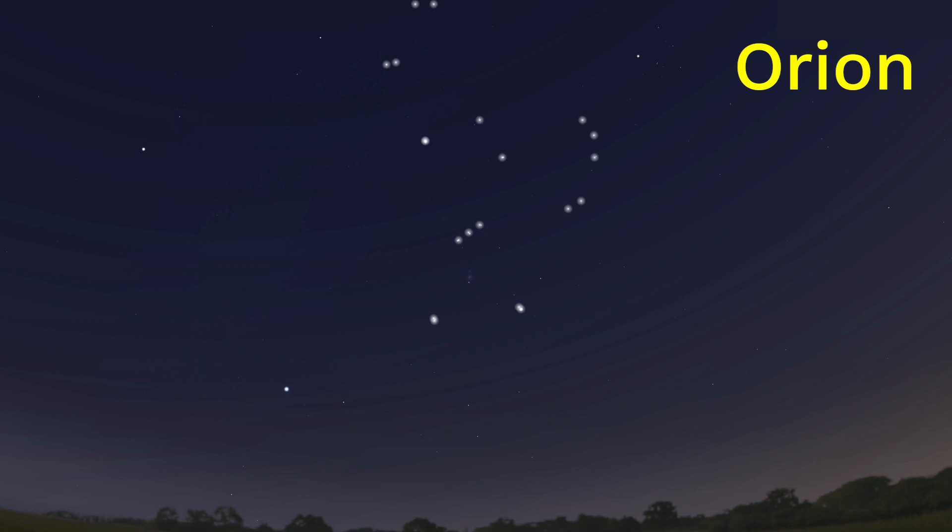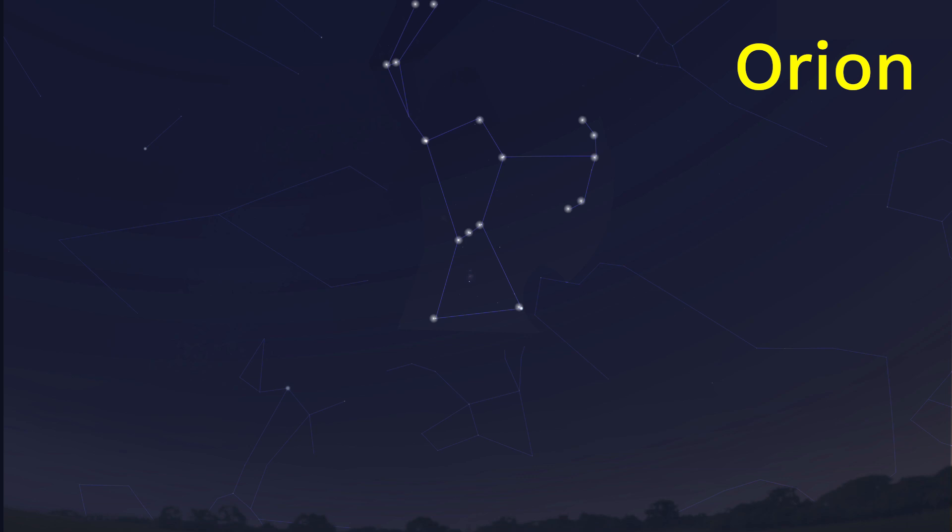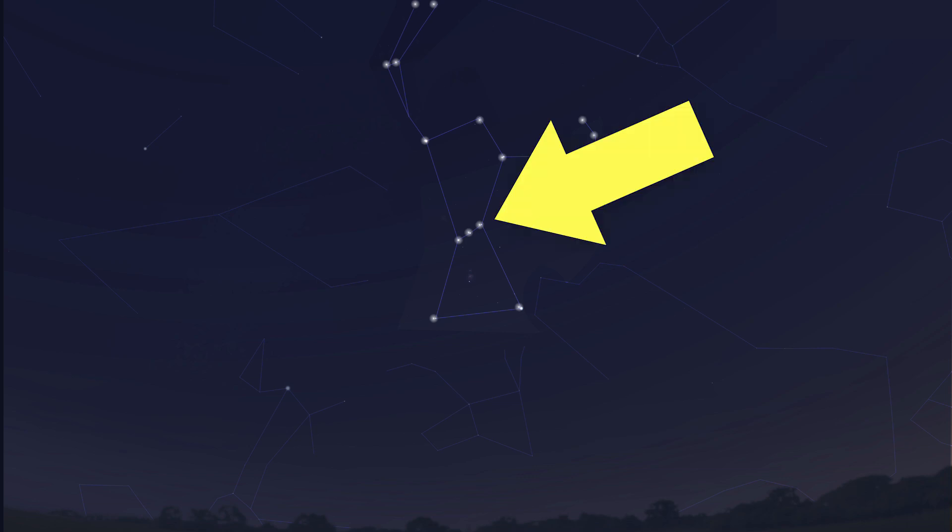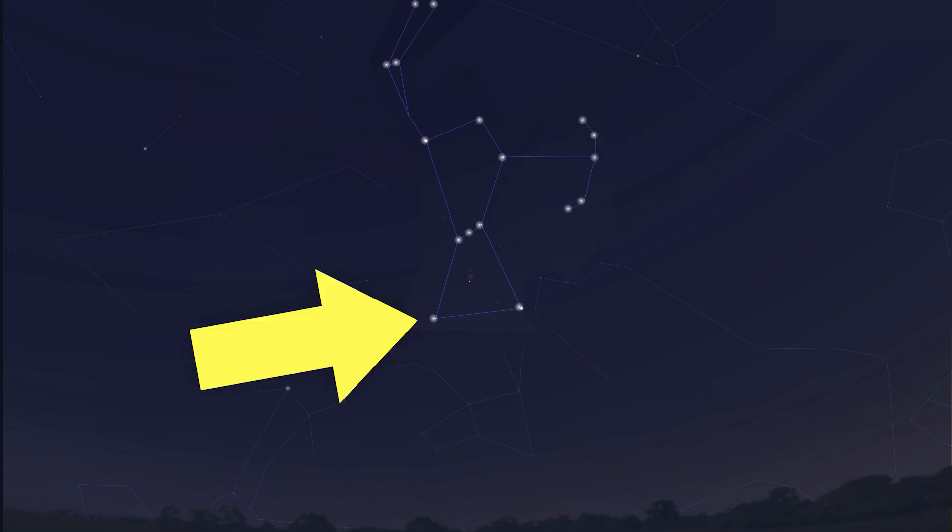Or take Orion, a group of stars often connected to form the outline of a person. Now, to the ancient Greeks who named him Orion, these three stars are his belt. These are his shoulders. Here's his feet.